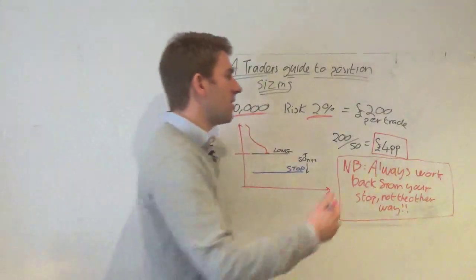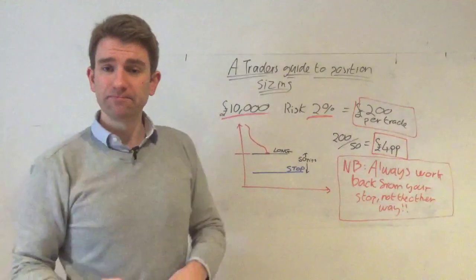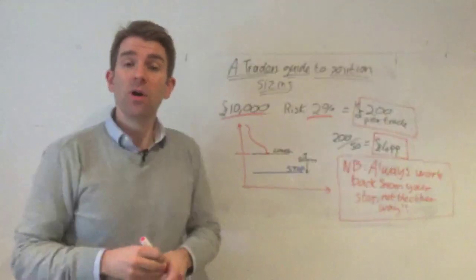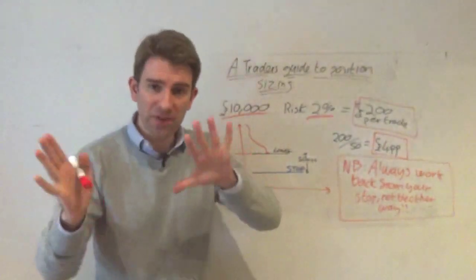So 2% risk, £10,000 account is giving us a £200 risk per trade. Okay, so we know now that for each trade we don't risk more than £200. Fine, that's done, that's settled, forget about that for the time being.